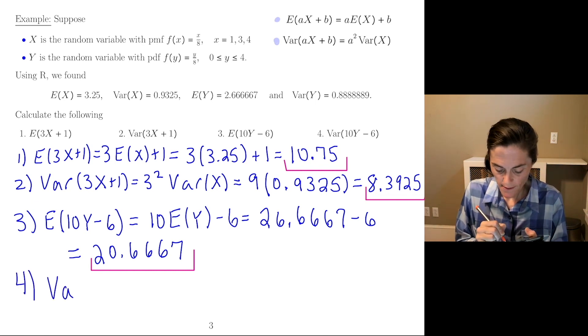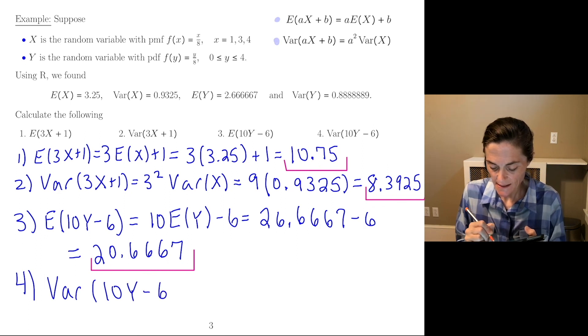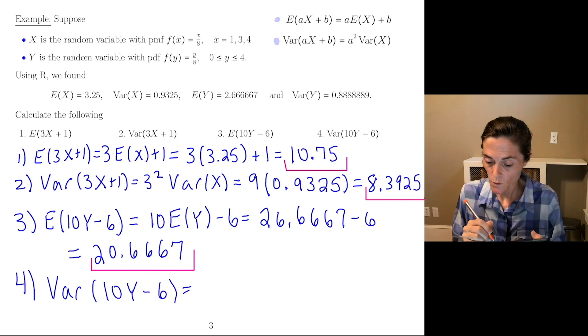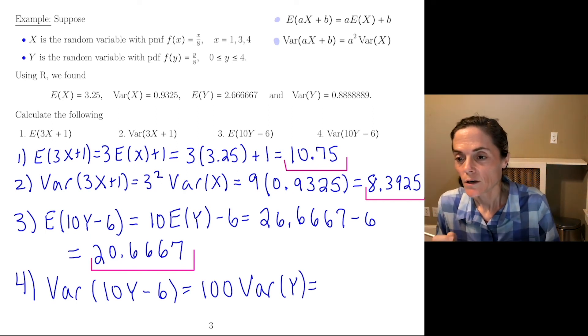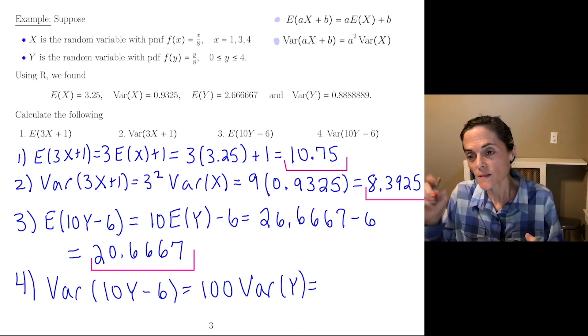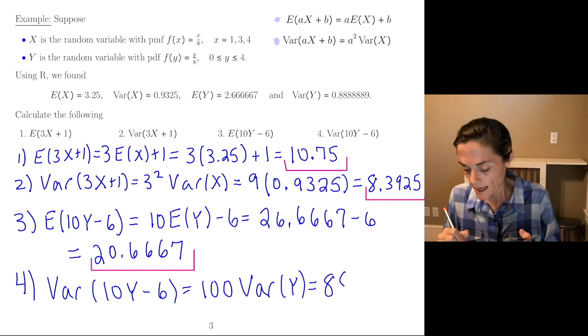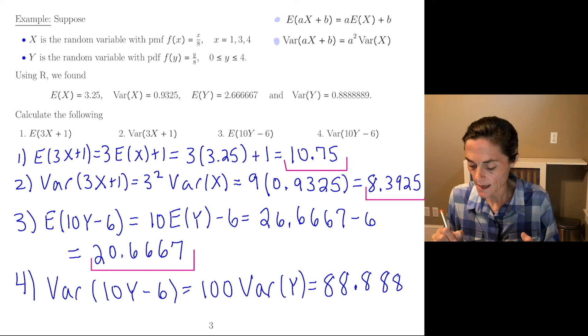Last one. So, again, we want the variance of 10Y minus 6. This would be 10 squared or 100 times the variance of Y. We just moved the decimal place over two, so we get 88.8889.